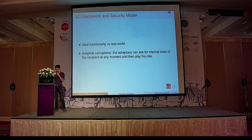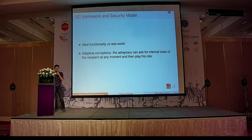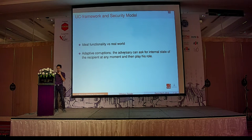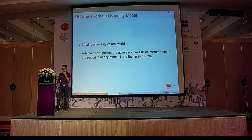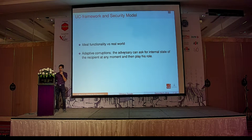The protocol will be UC secure if an adversary cannot distinguish between the ideal world and the real world. We allow the adversary to perform adaptive corruption, meaning the adversary can ask for the internal state of the user at any moment and then play their role. This is different from static corruption, where the adversary can only do so at the beginning of the protocol.